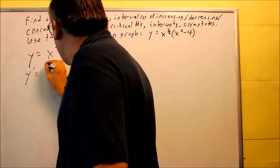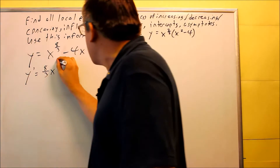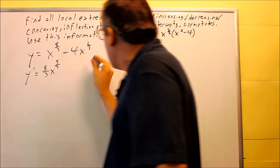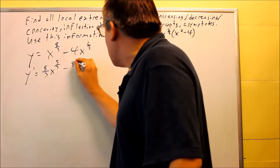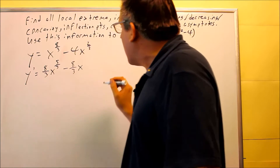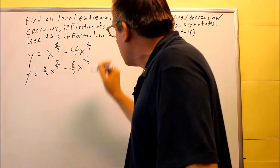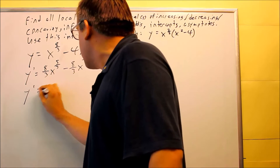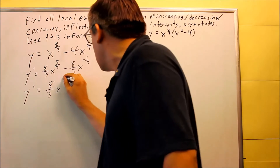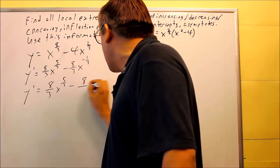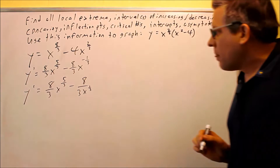Take the derivative: 8/3 comes down, x, subtract 1 from the exponent — subtract 3/3 — you're going to get x to the 5/3. For this next term, 2/3 multiplied by 4 gives you 8/3, x, subtract 1 from the exponent gives you negative 1/3. Then I want to rewrite this with positive exponents. When we do that, we get 8/3 x to the 5/3 plus 8 over 3x to the 1/3.